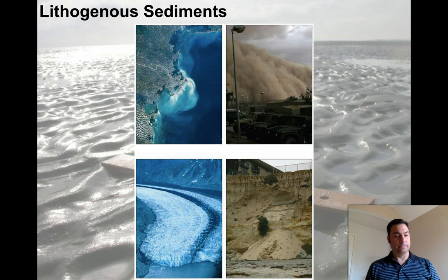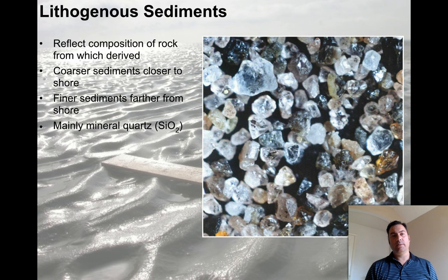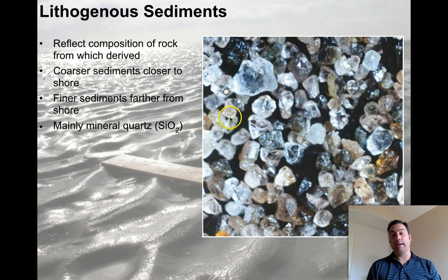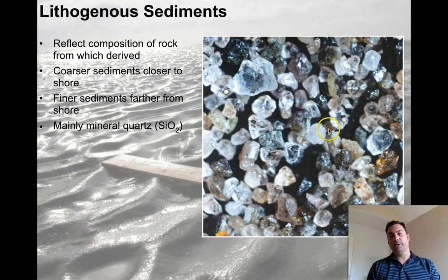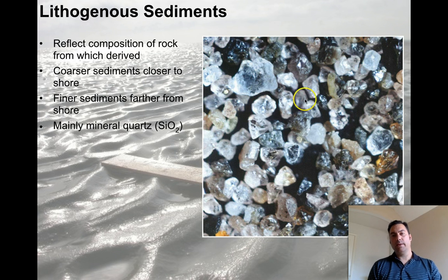Lithogenous sediments reflect the composition of rock from which they are derived — if it's from granite, it'll have many of the same minerals. Coarser sediments tend to be closer to shore; finer sediments are farther from shore. Many minerals are basically quartz — this sand here is almost entirely quartz grains with occasional feldspar. That white glassy mineral is mostly quartz, and that's the main composition of beach sand.